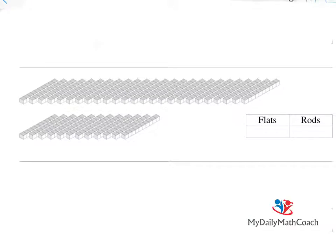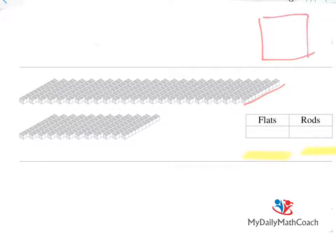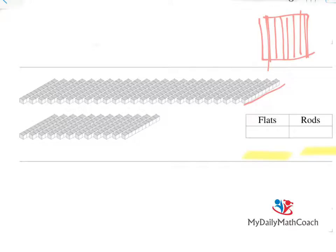Here is a problem, and on the right-hand side you can see where it says Flats in one column and Rods in another column. Each rod is really equal to 10 units, or one group of 10. We need to collect 10 rods in one group to equal one flat. If you imagine a flat broken into 10 rods, that would be a group of 100 — that's really what a flat is. So we can go through and carefully select groups of 5 rods, and 2 groups of 5 rods will equal 1 flat.